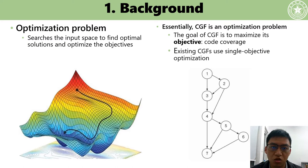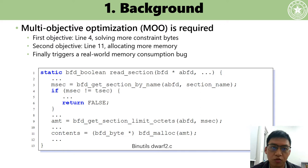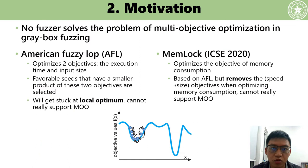However, existing CGFs use single-objective optimization. In real-world vulnerability detection scenarios, multi-objective optimization is required. This code snippet demonstrates a real-world Linux vulnerability. Two objectives need to be optimized to trigger it. The first objective, in line 4, is solving more constraints in the if statement. The second objective, in line 11, is allocating more memory. Currently, we can trigger a real-world memory consumption bug, but no prior work has solved the problem of multi-objective optimization in CGF.